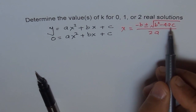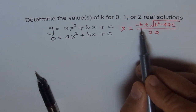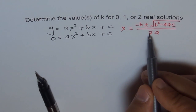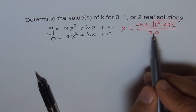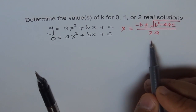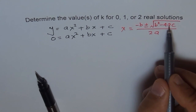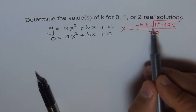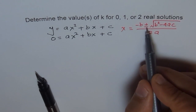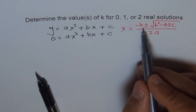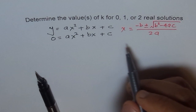If b squared minus 4ac equals 0, we get only one solution, and that solution is negative b over 2a, because plus or minus 0 gives us only that value. But if b squared minus 4ac is positive, anything under the radical is positive and will give us two values — the conjugate values, plus and minus — leading to two different real solutions.